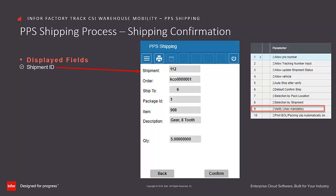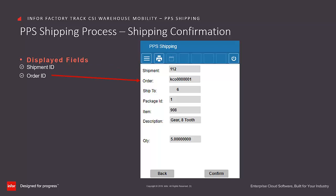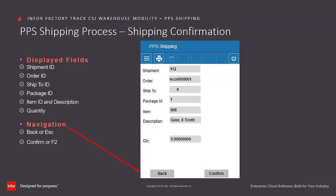The confirmation detail includes the shipment ID, the order, ship-to ID, package ID, item ID and description, and the quantity packed. Click on Confirm to continue.